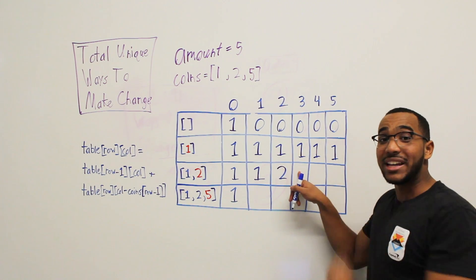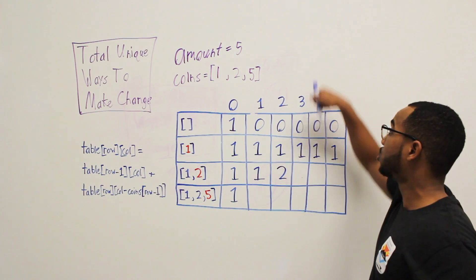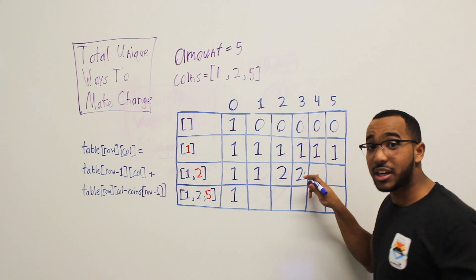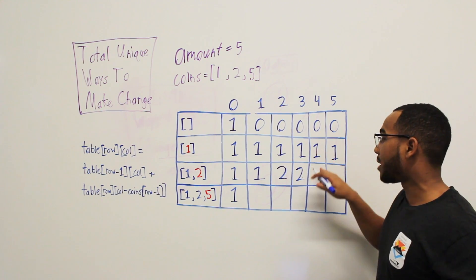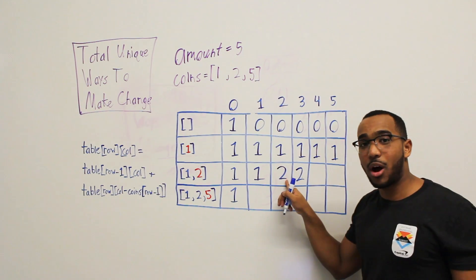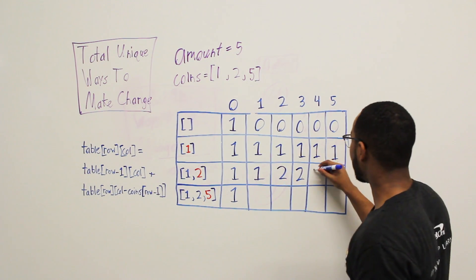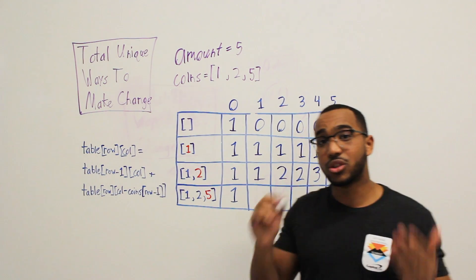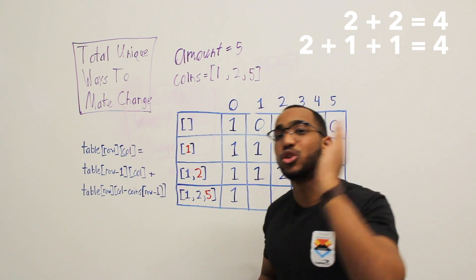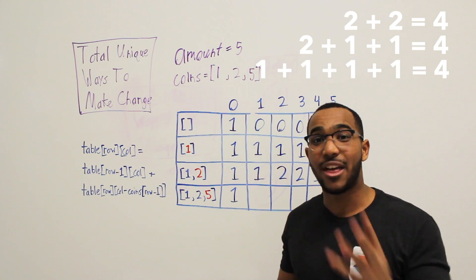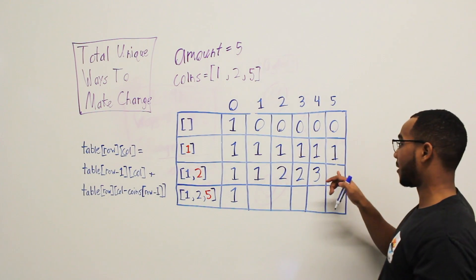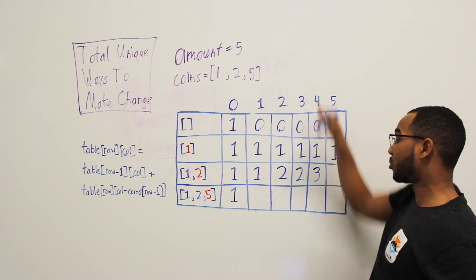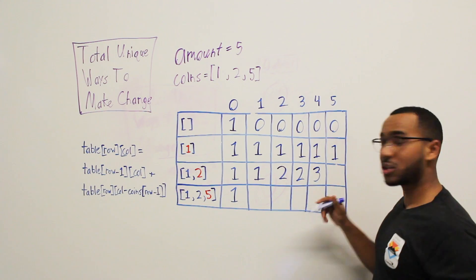At amount three: don't use the two coin — we get one. Do use the two coin — three minus two is one, stay in the same row — one plus one is two. At amount four: don't use the two coin — we get one. Do use the two coin — four minus two is two, stay in the same row — two plus one is three. If we need to make change for four with a one and a two coin, there are three ways: two twos, a two and two ones, or four ones. At amount five: don't use the two coin — one unique way. Do use it — five minus two is three, we have two unique ways — two plus one is three.